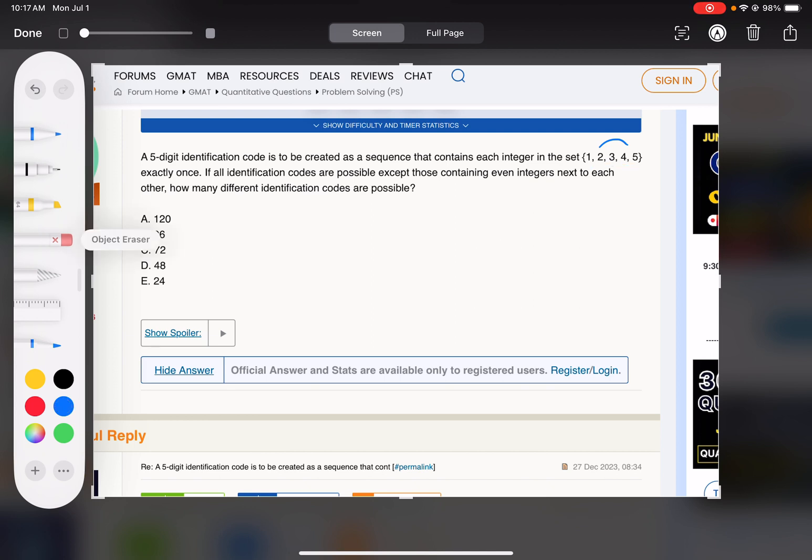We got to use all these numbers, so the total number of ways of doing that is 5 factorial, 5 times 4 times 3 times 2 times 1, and then we do where the 2 and 4 are next to each other.